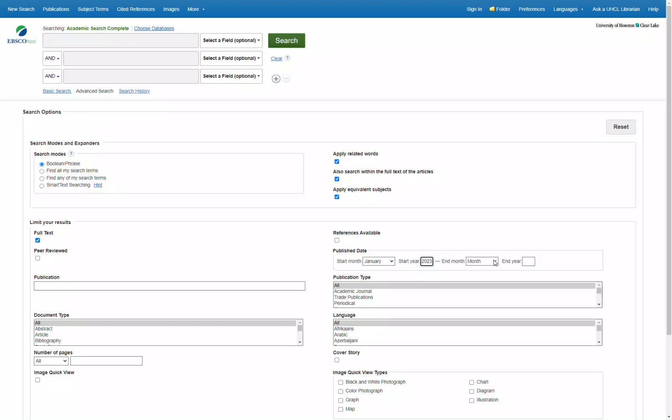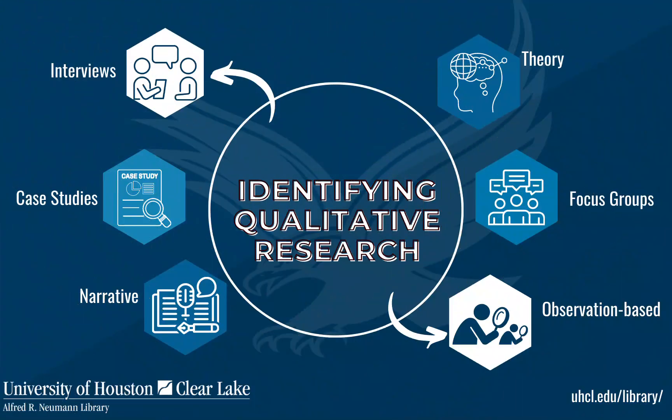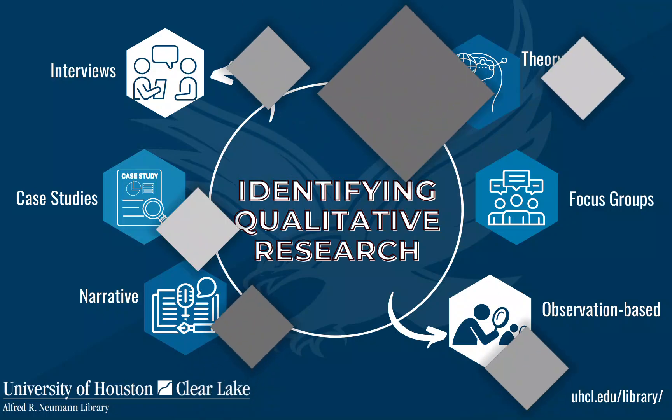The next few filters we will be applying are going to be part of the characteristics of qualitative research. Let's take a quick moment to recap: qualitative research is often represented in interviews, field observations, theories, case studies, historical data, narrative, and clinical research.